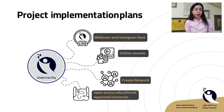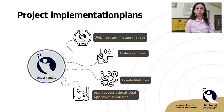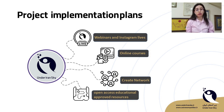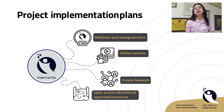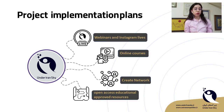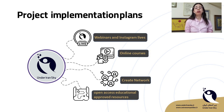Under Iran's Sky has four programs. The first is about scientific webinars and Instagram lives. The goal of this part is to connect well-known Iranian and non-Iranian astronomers with the public in Iran — whoever is interested in astronomy. This creates a great chance for people, especially elementary and secondary students, to meet astronomers and ask them questions.